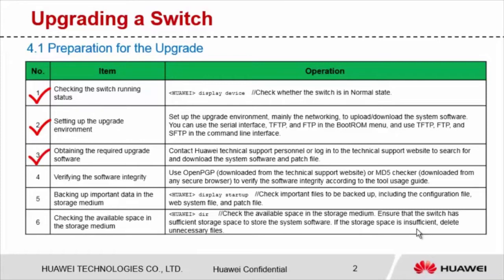Third, the system software is a system software package or patch file. You can log in to Huawei's technical support website to search for and download the system software, or contact Huawei technical support personnel to obtain it. Fourth, verify the software integrity using tools such as OpenPGP or MD5 Checker. You can download the tools on Huawei's technical support website and verify the software integrity according to the tool usage guide.